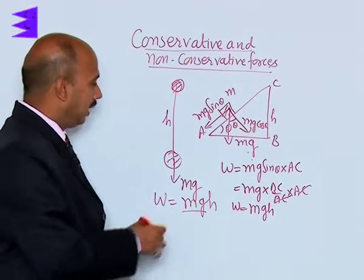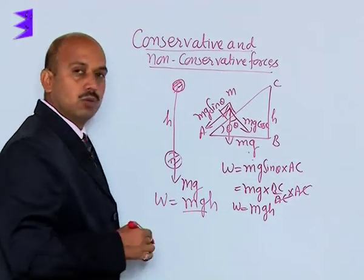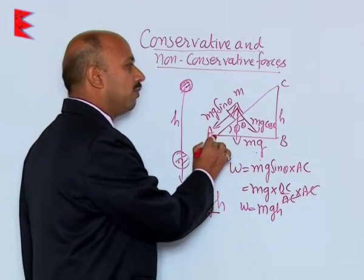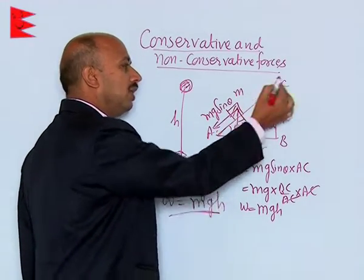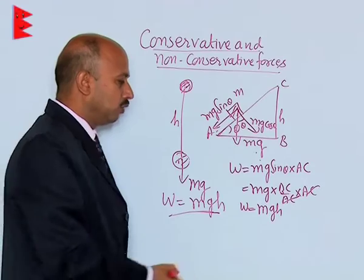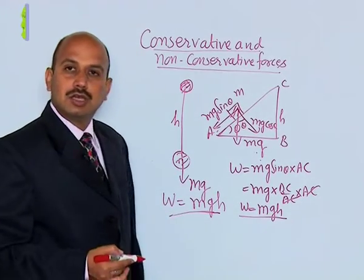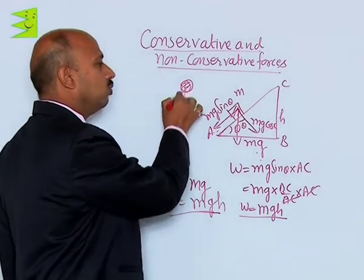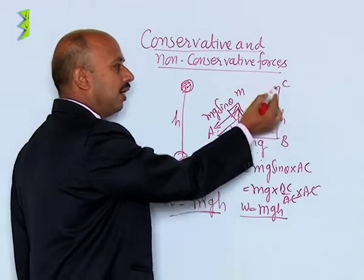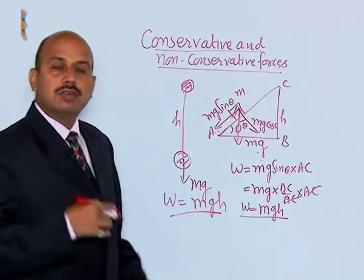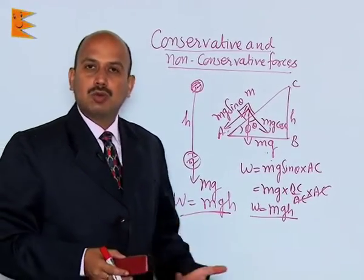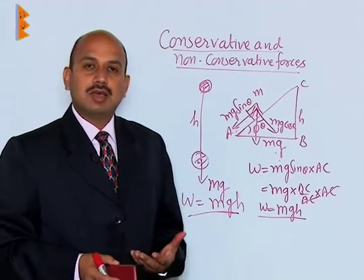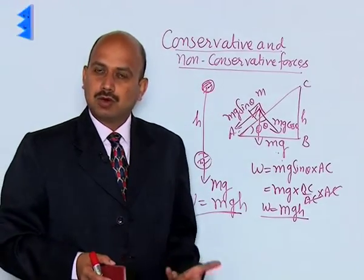Whether you take the body directly from the bottom to the top point — work done is mgh — or you take the body from a to c along the inclined plane, the work done is also mgh. So this actually depends on the initial and final positions whose height is h, and it does not depend on the nature of the path followed. Work done by conservative forces is independent of the path followed.